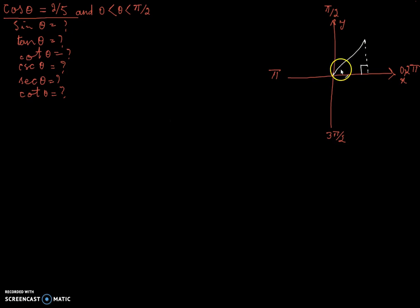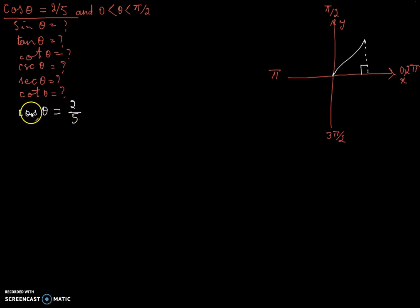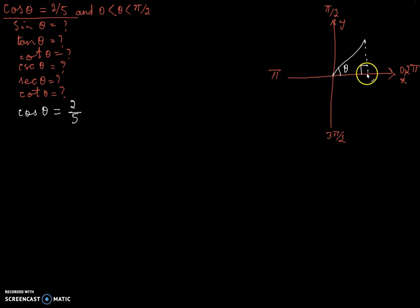If the angle is like this, you can create a right triangle here and calculate the three sides of the triangle, and then you can calculate the other trigonometric ratios. You can think about this as: cos θ is always the adjacent side divided by the hypotenuse, so it is always x divided by r.